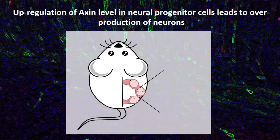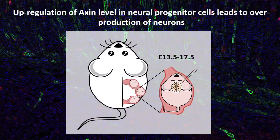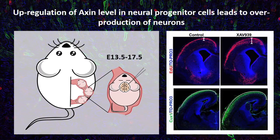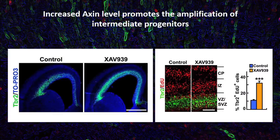By injecting a small molecule, XAV939, into the ventricle of embryonic mouse brains, we were able to elevate axin protein levels transiently. Increased axin protein levels enhanced neural production, which consequently led to more cortical neurons and an enlarged cortex. To understand how axin works, we specifically examined the effects of XAV939 on populations of neuroprogenitors. Interestingly, this small molecule only increased the number of intermediate progenitors, but not the radial glia.